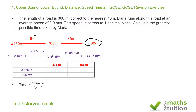Looking at this column by column: dividing 375 by 3.85 gives 97.40 seconds; dividing 375 by 3.95 gives 94.94 seconds. Then dividing 385 by 3.85 gives 100 seconds; and dividing 385 by 3.95 gives 97.46 seconds. These are the possible time values for all the extreme combinations.